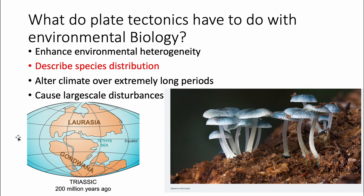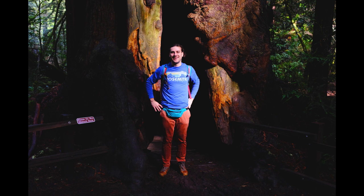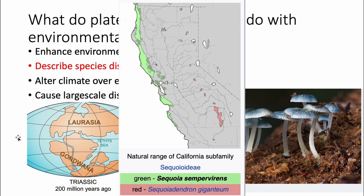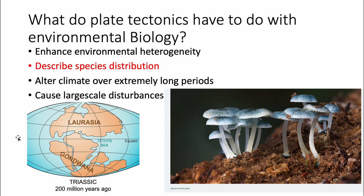We need to briefly learn about species distribution — where an organism lives. For example, California coastal redwoods are giant trees that only live in a very specific region on the California coast. You don't find them anywhere else. Plate tectonics actually help us describe and understand species distribution.